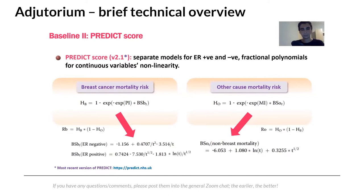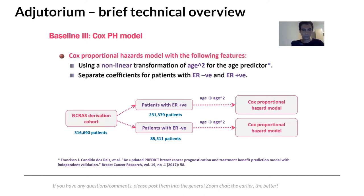A third baseline is a Cox-proportional hazards model that models age non-linearly and has separate coefficients for ER-negative and ER-positive patients, derived using the same 316,000-patient derivation cohort. This lets us test whether our machine learning model improves over standard statistical models on the same dataset.